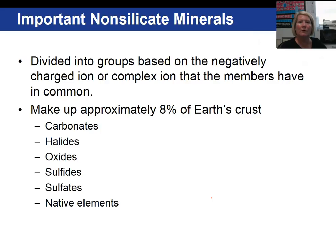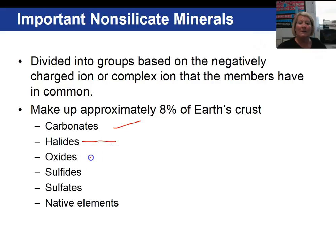Let's move on to important non-silicate minerals. They are divided into groups based on the negatively charged ion or complex ion. They make up approximately 8% of the earth's crust and are often economically valuable. Carbonates, halides, oxides, sulfides, sulfates, and native elements are examples of non-silicate mineral groups.